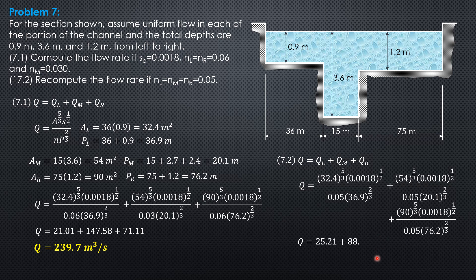So Q is 25.21 plus 88.55 plus 85.33. So the total Q is 199.1 cubic meters per second.